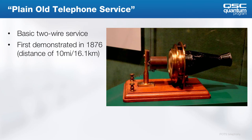Analog telephony is a very old technology. It was first demonstrated at the World's Fair in 1876 over a distance of about 10 miles. In the beginning, there was only very basic signaling and audio, but over the centuries we started superimposing additional features on those same two wires. Analog telephony is often referred to as POTS, or plain old telephone service, which is probably the saddest but most descriptive name you can think of.